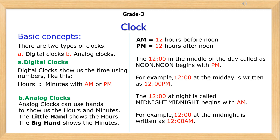Digital clocks show us the time using numbers, like this: hours colon minutes with a.m. or p.m.